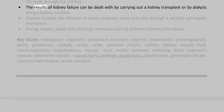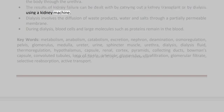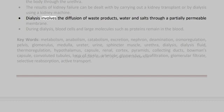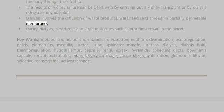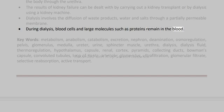The results of kidney failure can be dealt with by carrying out a kidney transplant or by dialysis using a kidney machine. Dialysis involves the diffusion of waste products, water, and salts through a partially permeable membrane. During dialysis, blood cells and large molecules such as proteins remain in the blood.